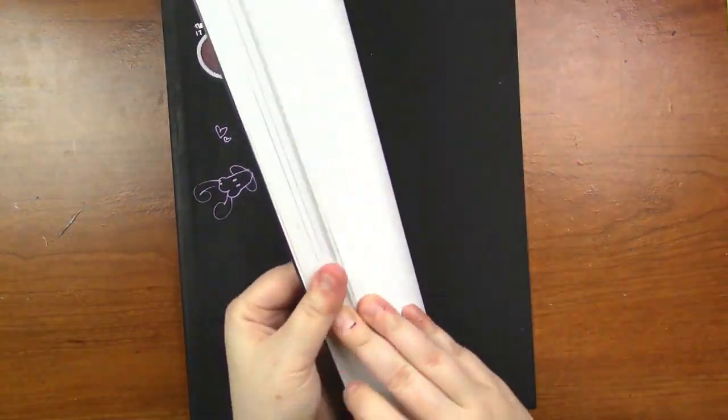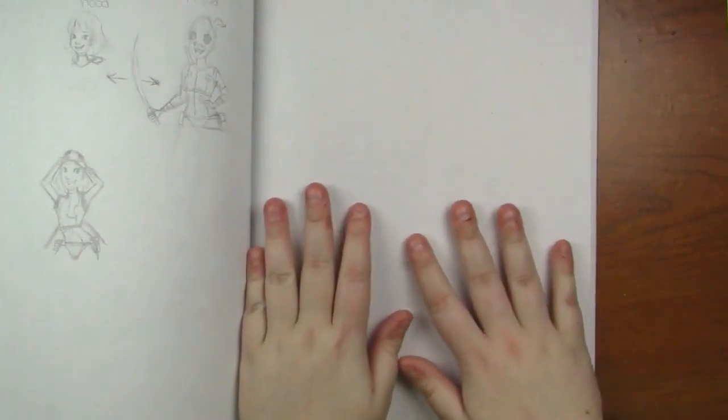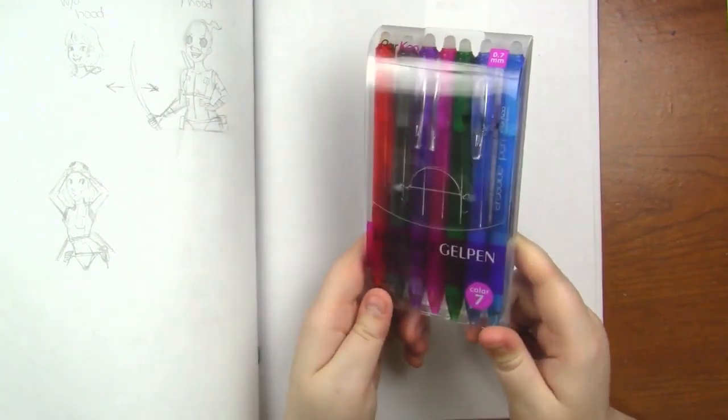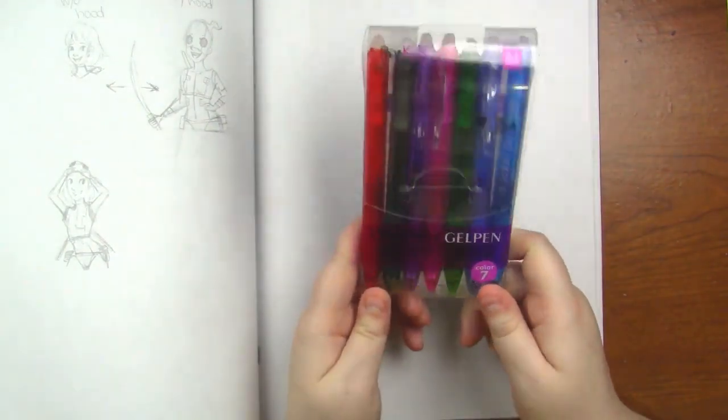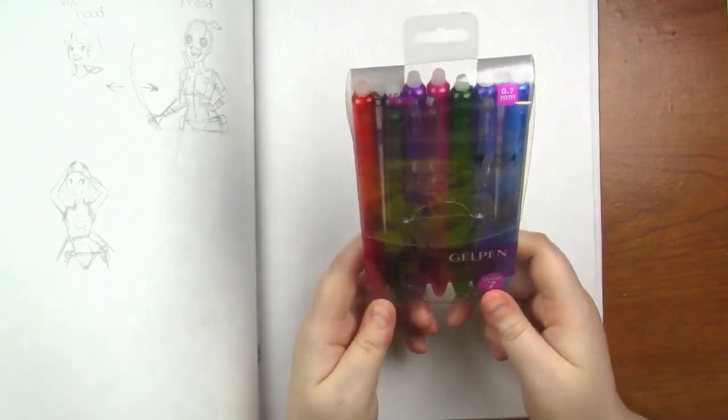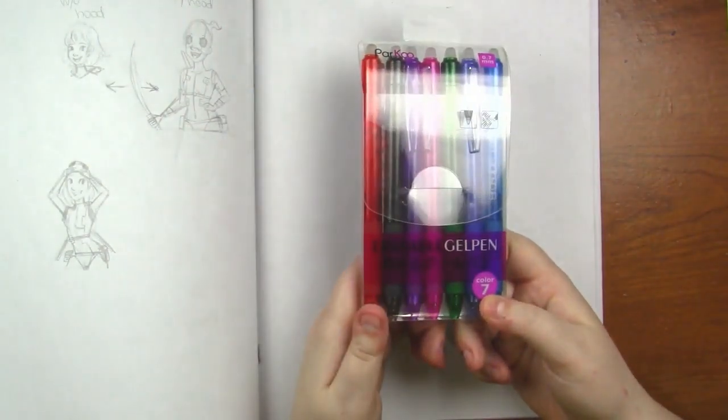So I'm just going to flip open my sketchbook and I'm going to do it right over here. I am going to be using my Parku erasable gel pens. I know it's probably cheating, but technically these are ballpoint pens, so it's not cheating that much.